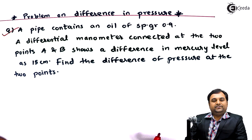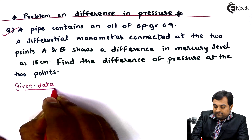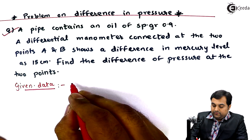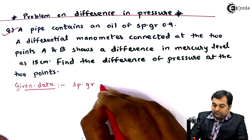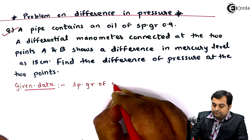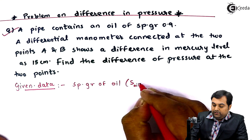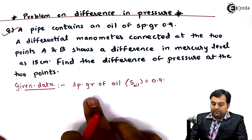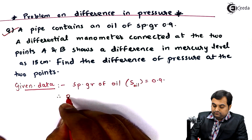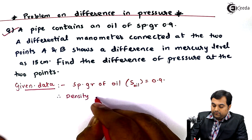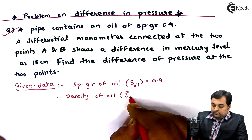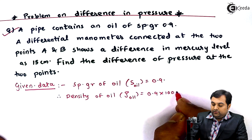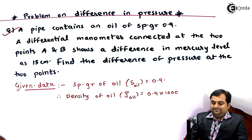Writing the given data: a pipe contains an oil of specific gravity 0.9, so specific gravity of oil equals 0.9. Once we know the specific gravity of oil, we can calculate the density of oil. Density of oil equals specific gravity multiplied by density of water, which is 1000 kg per meter cube.